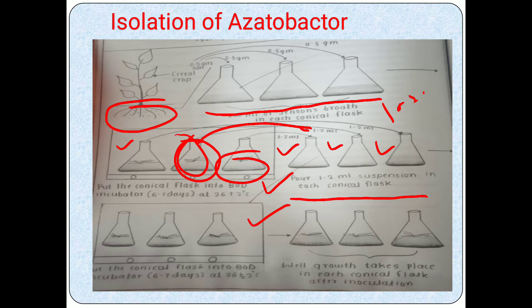Put these three conical flasks again into the BOD incubator at 26 plus or minus 2 degrees Celsius for six to seven days. Within six to seven days, similar growth is observed, and the colonies of Azotobacter develop on the Jensen broth media. In this way, we multiply Azotobacter in mass quantity.